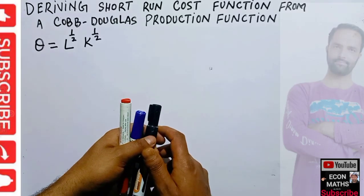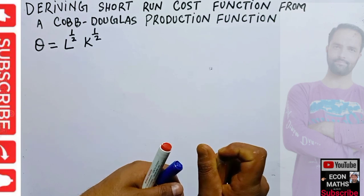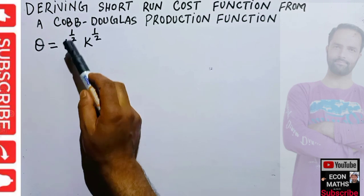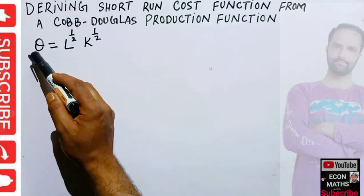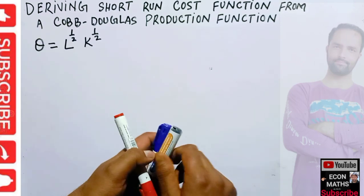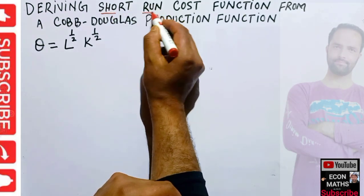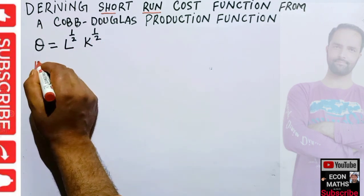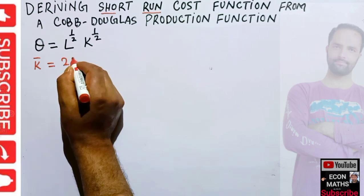In this video we will learn how to derive the short-run cost functions from a Cobb-Douglas production function. Let us say we have a production function Q = L^(1/2) * K^(1/2), where Q is the output, L is the units of labor, and K is the units of capital. Since we are interested in the short run, let us say our capital is fixed at 25 units.